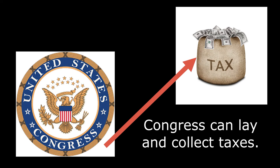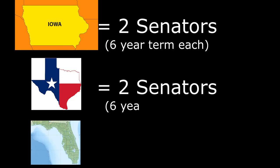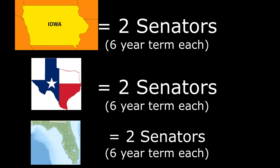Amendment 17: The Seventeenth Amendment holds that the Senate shall have two senators from each state, and each term will be six years. If there are vacancies, there will be an election to fill those vacancies. There may be temporary appointments to replace those vacancies until an election can be held.